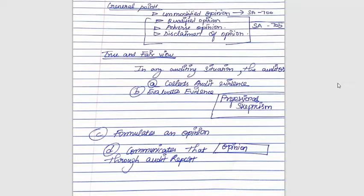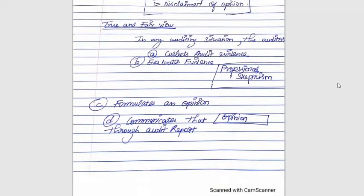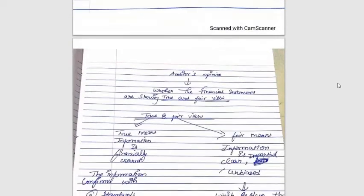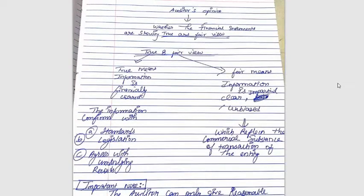Professional skepticism comes into play here. In brief, professional skepticism means an auditor must have a questioning mind — asking the client questions, gathering evidence, and knowing the art of evaluating that evidence. After collecting and evaluating the evidence, the auditor formulates an opinion and communicates it through the audit report. The auditor's opinion in the audit report elaborates whether the financial statements are showing a true and fair view.